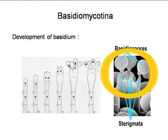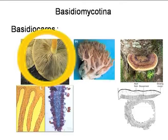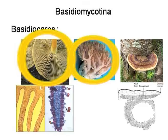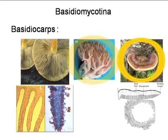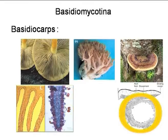Basidiospores and basidium, together with some sterile hyphae, constitute macroscopic fructifications or fruit bodies typically designated as basidiocarps. Basidiocarps may be of various types. You can see the basidiocarp of gill fungi, that is members of Agaricales; this is the coral fungi; and this is the bracket fungi, members of Polyporaceae. This is the fine section of the gill where you can see basidium bearing terminal basidiospores. In pore fungi or members of Polyporaceae, the basidium containing basidiospores lines the inner surface of the pore.